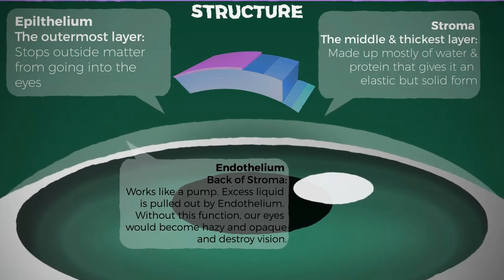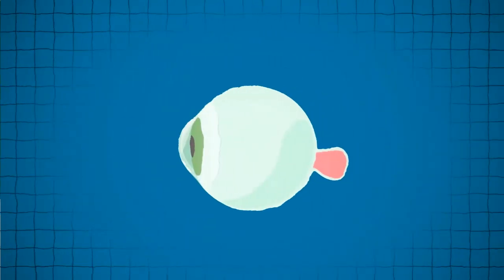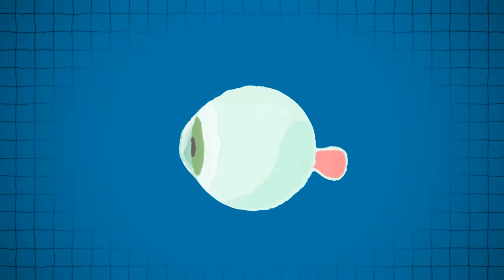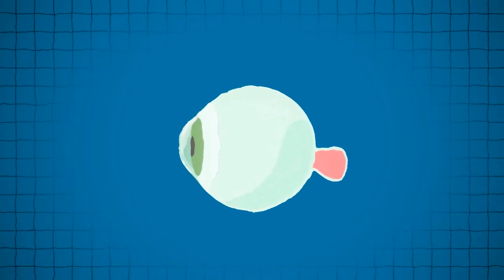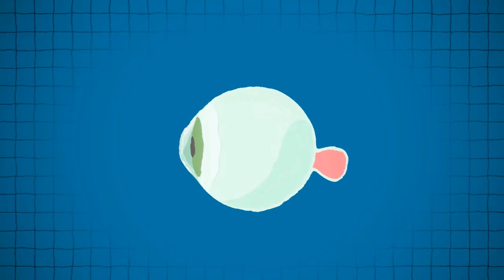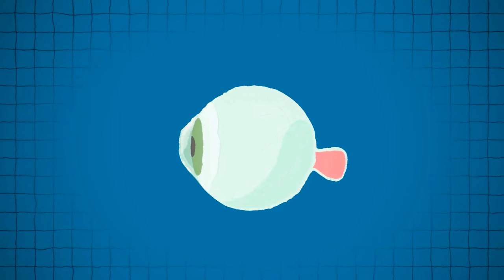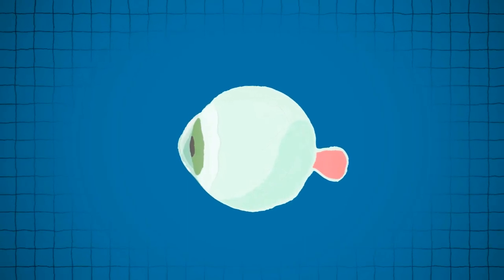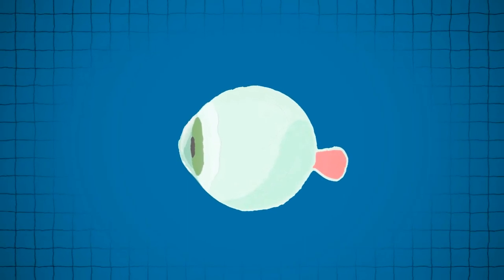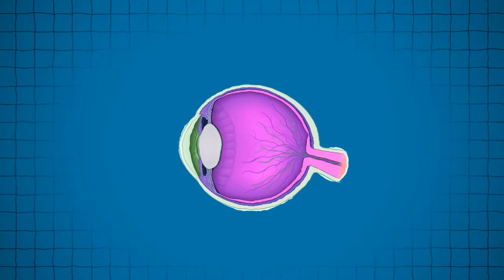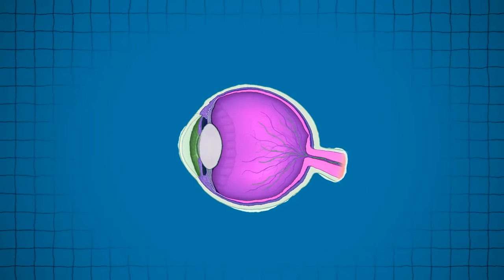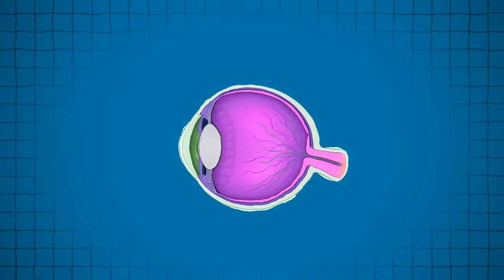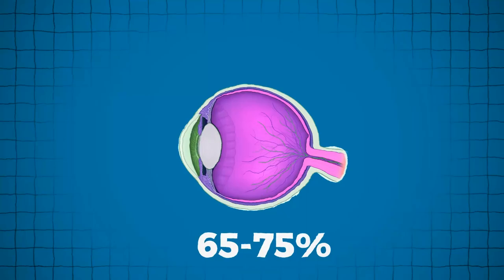As the clear outermost layer of the eye, the cornea's main job is to focus light. The cornea acts as the eye's outermost lens. It functions like a window that controls and focuses the entry of light into the eye.